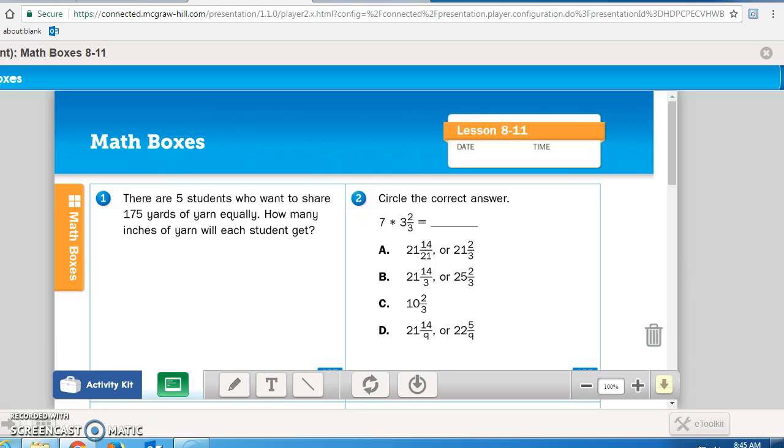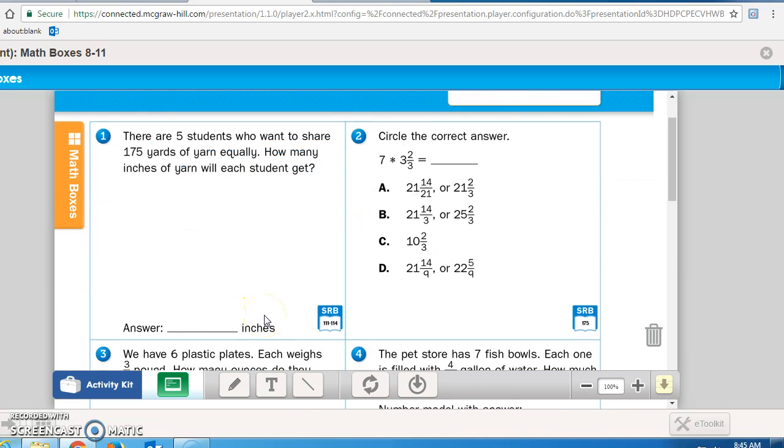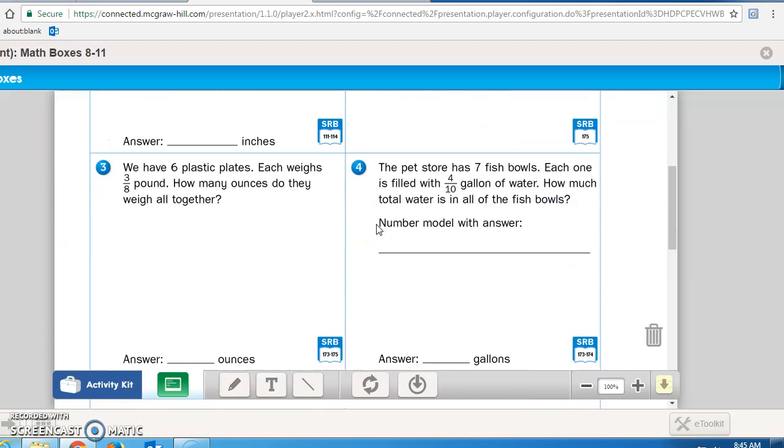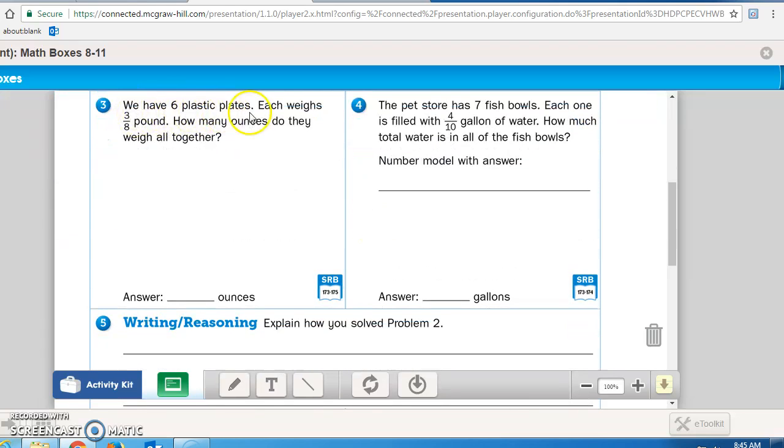Number 1 says there are 5 students who want to share 175 yards of yarn equally. How many inches of yarn will each student get? So first you're gonna have to figure out the yards that each student would get, and then you have to convert that into inches. Number 2 asks you to circle the correct answer when multiplying 7 times 3 and 2/3.